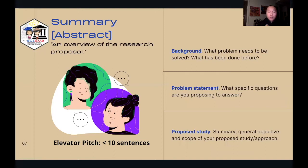So the second part of a research proposal is what we call the summary or the abstract. An abstract or a summary gives you an overview of the research proposal.